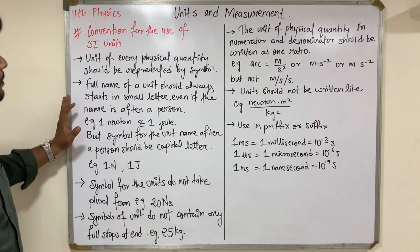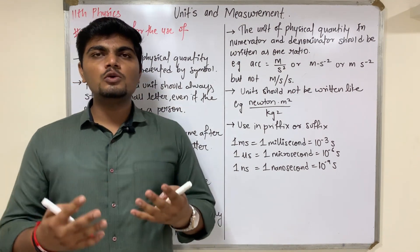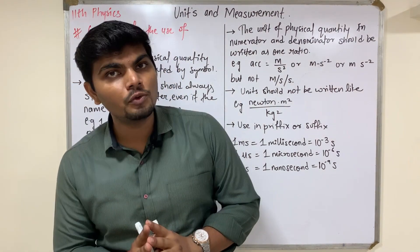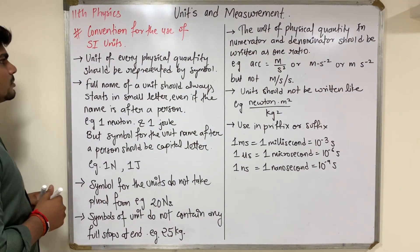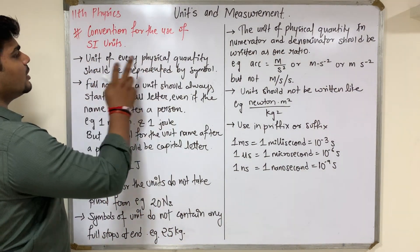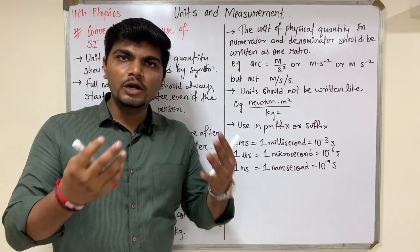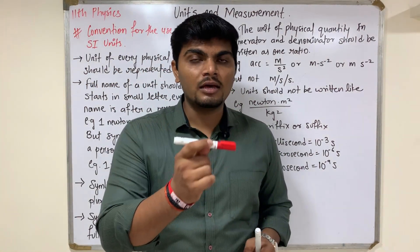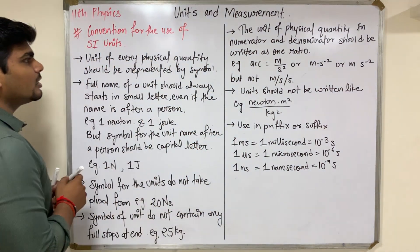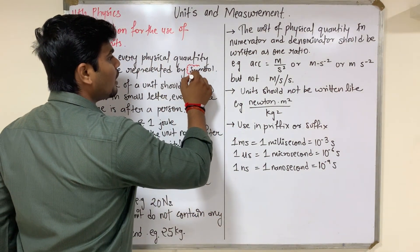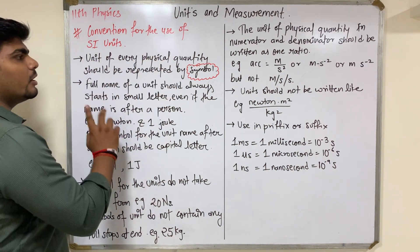Now let's talk about the conventions for the use of SI units. The first convention is: the unit of every physical quantity should be represented by a symbol. For example, length is a physical quantity and it will have a unit — we represent that unit with a symbol. Please note the word 'symbol' — every physical quantity must be represented with its proper symbol.